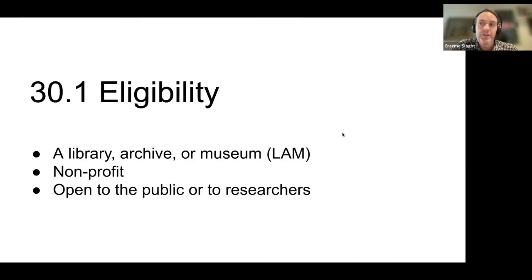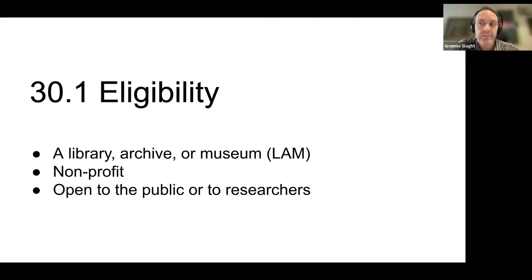Regarding eligibility, Section 30.1 has a fairly broad eligibility requirement for LAMs, including museums. The definition of library, archive, and museum tracks to the definition of a LAM in Section 2 of the Copyright Act. The only limitations are that the LAM cannot be a for-profit institution or be controlled and administered by a for-profit body, and its collections must be open to the public or to researchers. A corporate library or archive would not qualify — though fair dealing might still apply in that case.